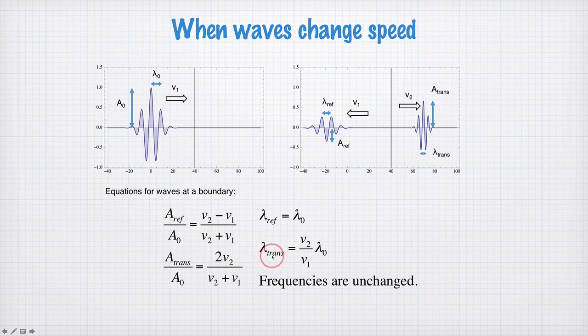The transmitted wavelength is scaled by the ratio of the velocities. The frequency of the wave is unchanged. So when you go from one medium to another, the velocity changes, the wavelength changes, but the frequency of the wave does not change.